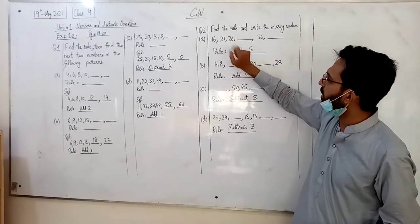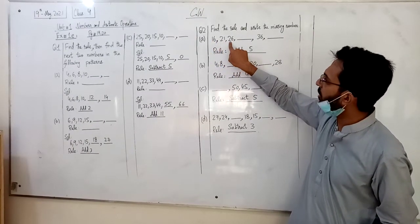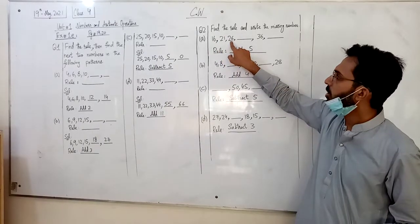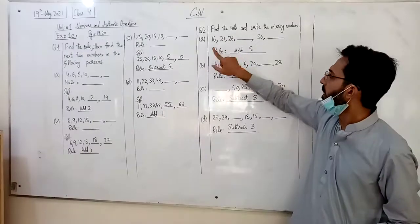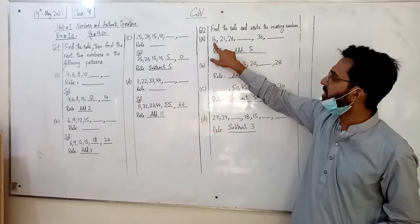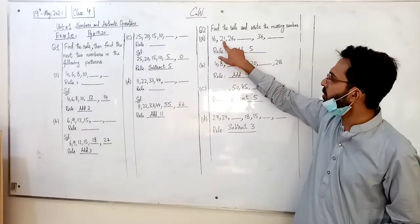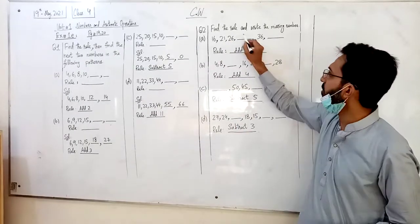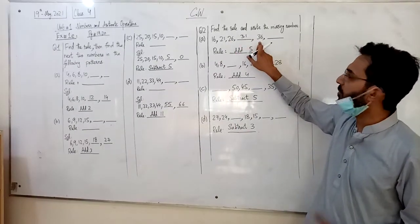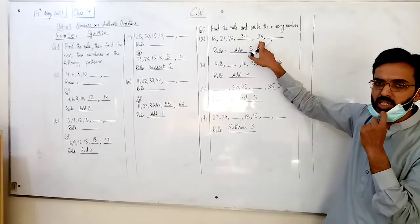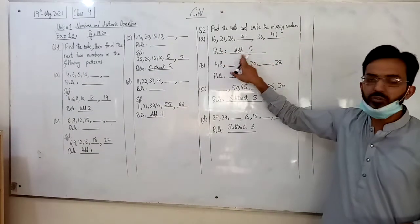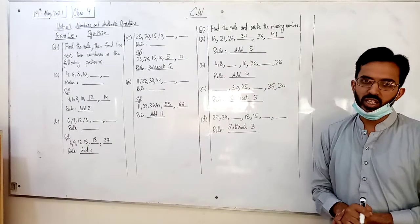16, 21, 26. 16 plus 5 is 21, 21 plus 5 is 26, 26 plus 5 is 31, 31 plus 5 is 36. We have already written 36 plus 5 is 41. So rule what is? 5 plus add. So simple.